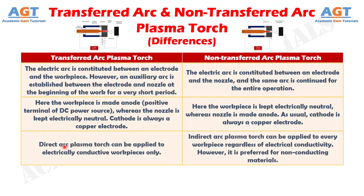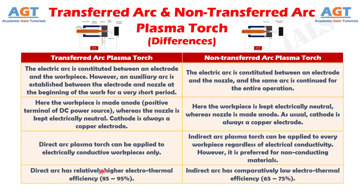Number three: direct arc plasma torch can be applied to electrically conductive workpieces only, whereas indirect arc plasma torch can be applied to every workpiece regardless of electrical conductivity. However, it is preferred for non-conducting materials. Number four: direct arc has relatively higher electrothermal efficiency, from 85 to 95%, whereas indirect arc has comparatively low electrothermal efficiency, from 65 to 75%.